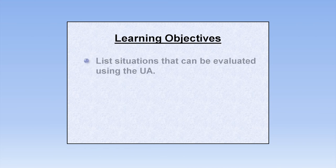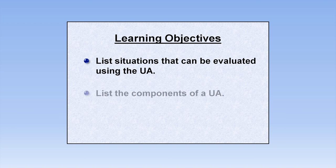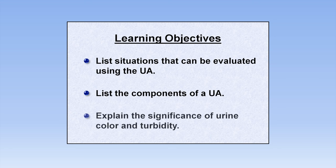By the end of part one of this short series, you should be able to list some situations that can be evaluated using the UA, list the components of a UA, and explain the significance of the color and turbidity.